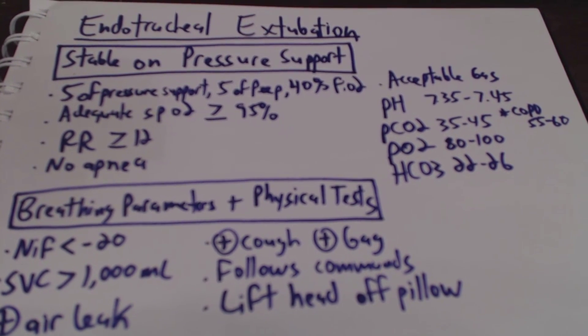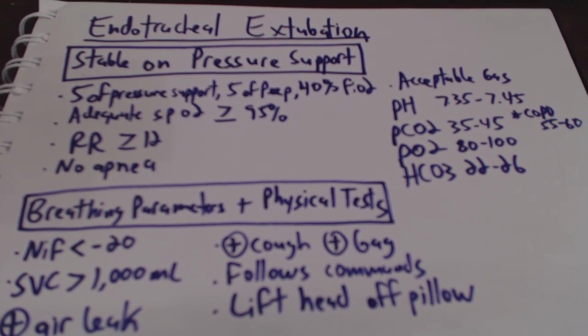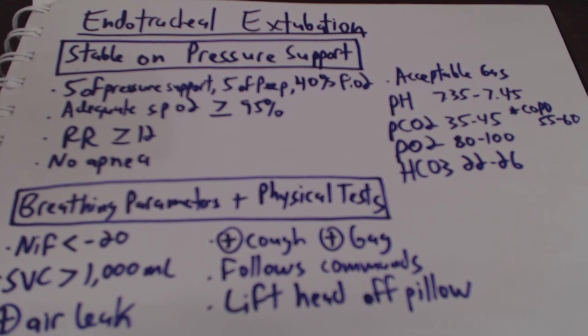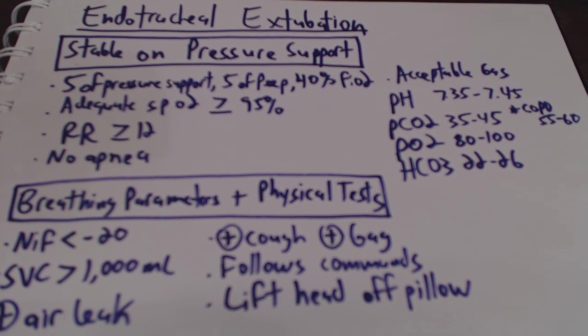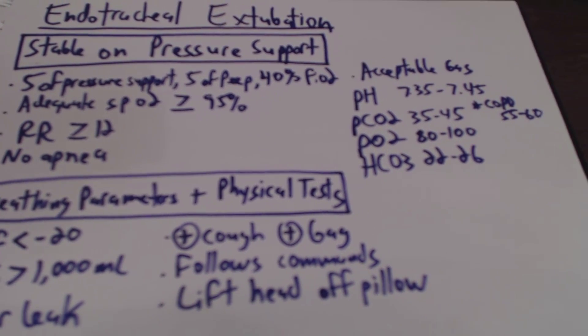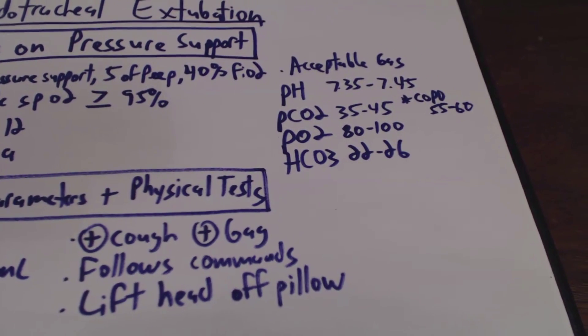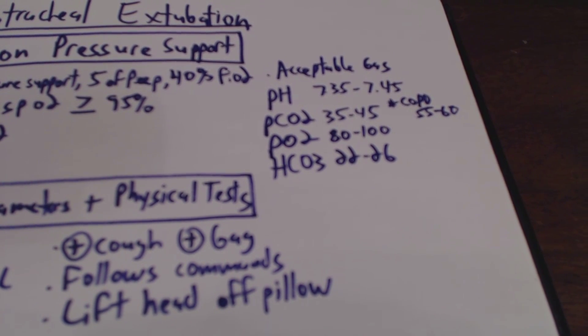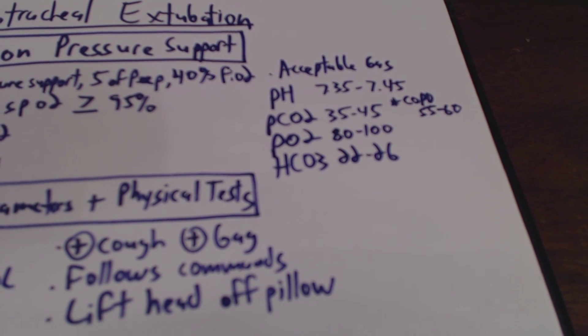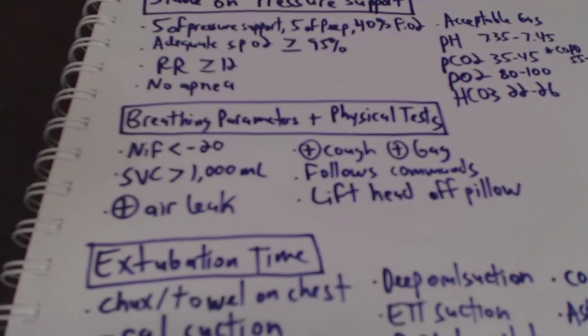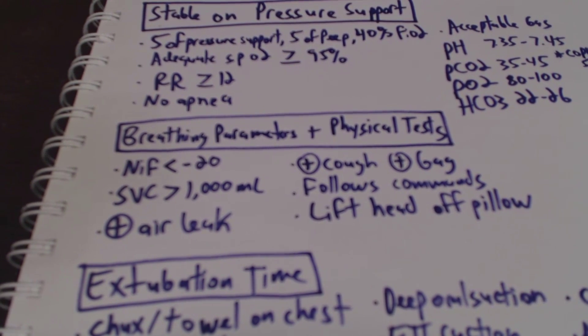For endotracheal extubation, we'll make sure the patient is stable on pressure support, so 5 and 5 and 40%. We want to make sure the patient has adequate SpO2, greater than or equal to 95%, respirations greater than or equal to 12, no episodes of apnea, acceptable blood gas. And once again, we're going to be tailoring this to the patient's past medical history. So pH 7.35 to 7.45, pCO2 35 to 45, pO2 80 to 100, bicarb 22 to 26.